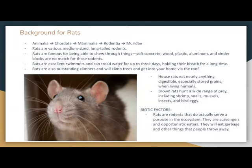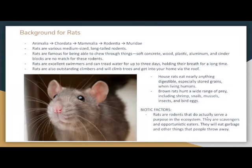Rats are excellent swimmers and can tread water for up to three days, holding their breath for a long time. Rats are also outstanding climbers and will climb trees and get into your home via the roof. House rats eat nearly anything digestible, especially stored grains. Brown rats hunt a wide range of prey, including shrimp, snails, mussels, insects, and bird eggs. Rats are scavengers and opportunistic eaters — they will eat garbage and other things that people throw away.